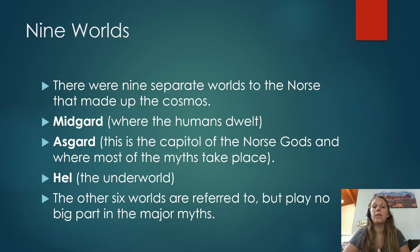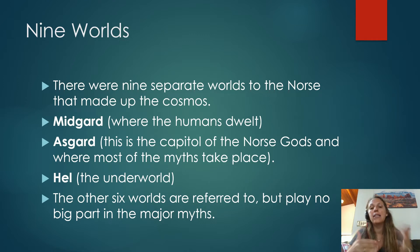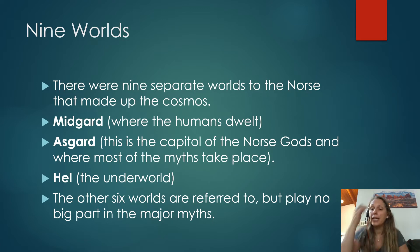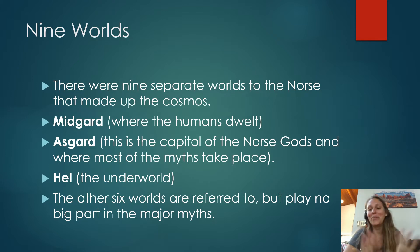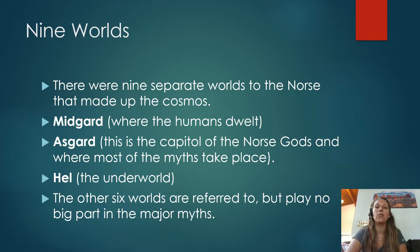Norse mythology is split up into nine separate worlds. There's Midgard, right in the middle, where people dwelled. There's Asgard, where the Norse gods lived and where most of the myths take place. There's Hel, the Underworld, and then six other worlds that aren't super important in the major myths — including a very hot realm and a very cold realm. Connecting all of these is the World Tree, which all the layers are stacked upon and which connects them all together.